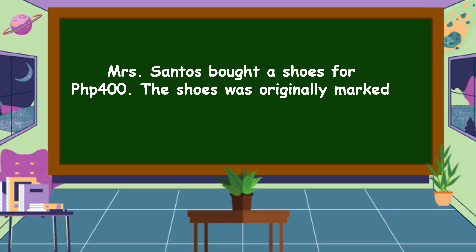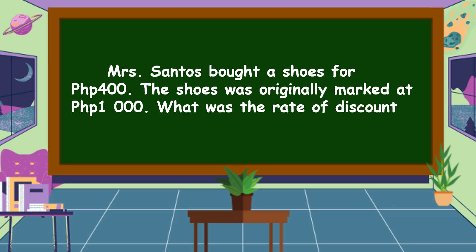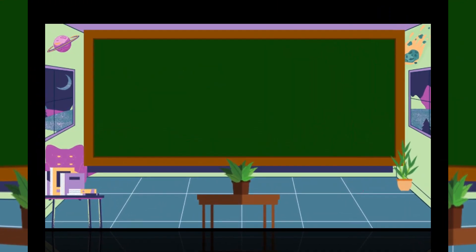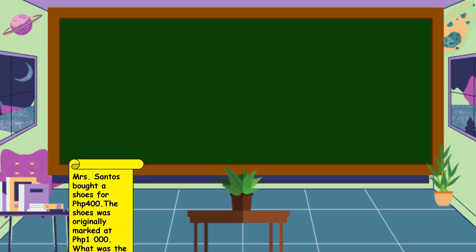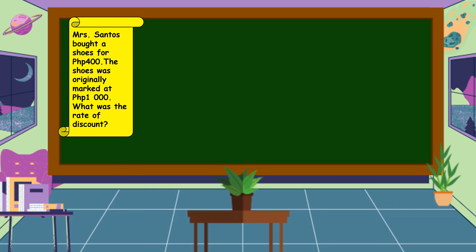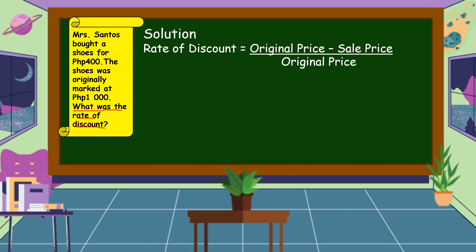Let's answer the following problem. Mrs. Santos bought shoes for 400 pesos. The shoes were originally marked at 1,000 pesos. What was the rate of discount? Let's analyze and solve the problem. The problem is asking for the rate of discount. The formula is: rate of discount = (original price − sell price) ÷ original price. What is the original price and the sell price in the problem?